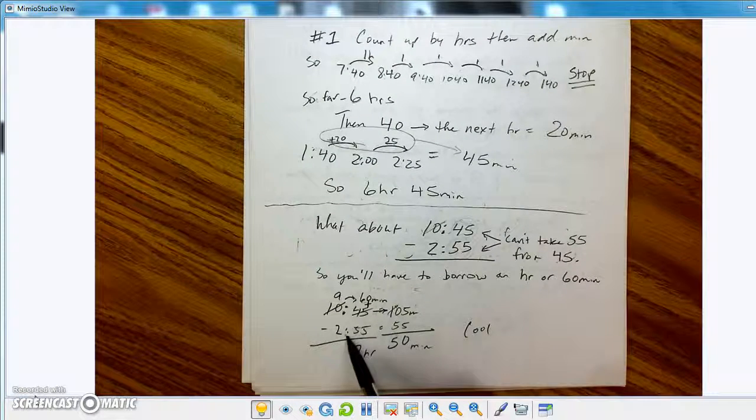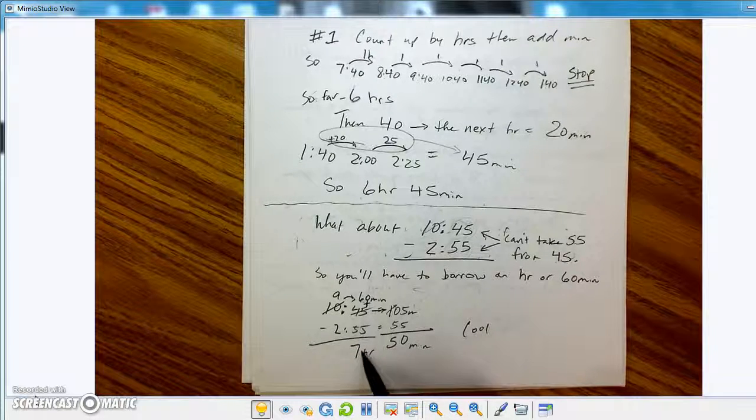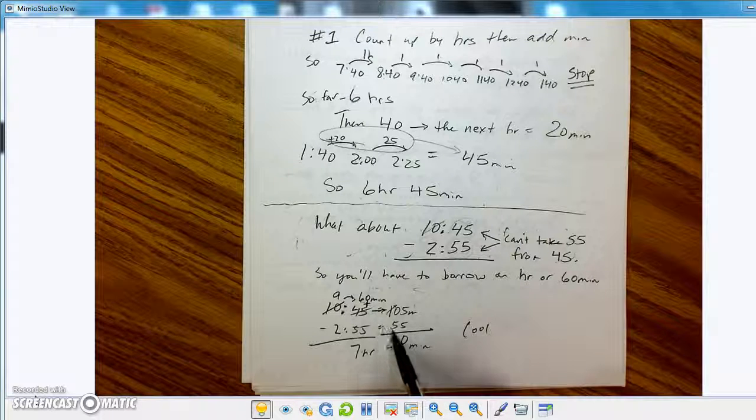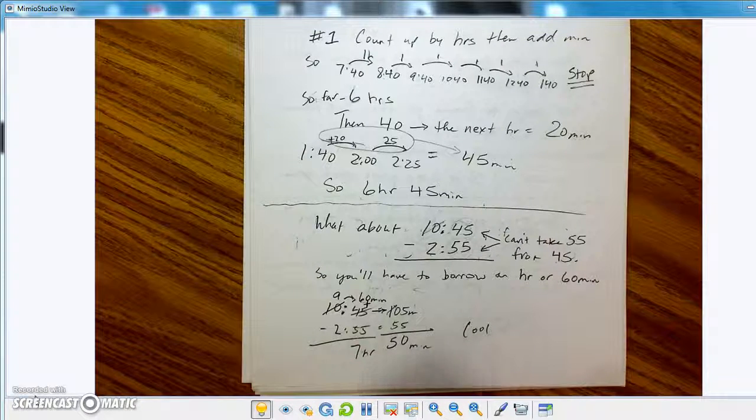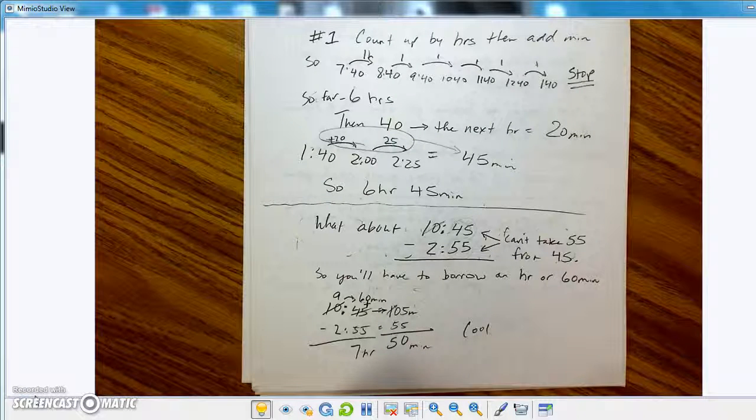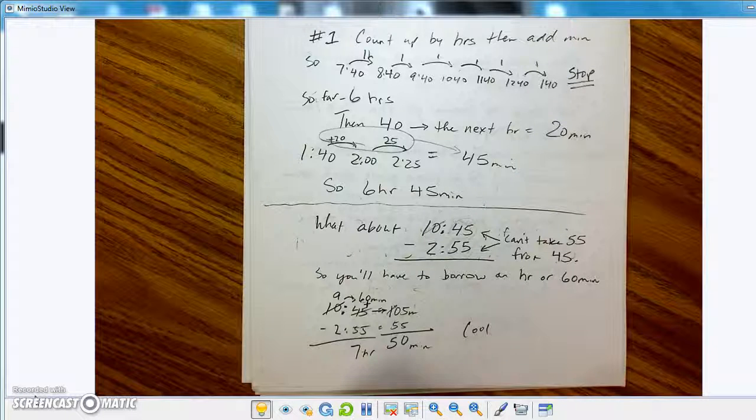All right. So then, now I can go ahead and subtract. I can go 9 minus 2, which ends up being 7. And then 105 minutes minus 55 minutes equals 50 minutes. And so that would be 7 hours and 50 minutes goes by. Get it? Pretty cool, I guess.